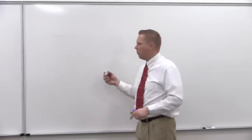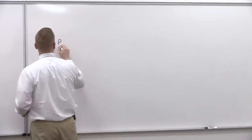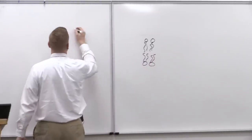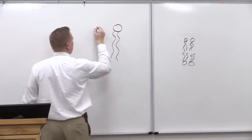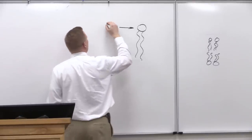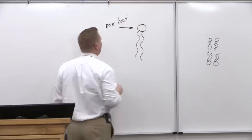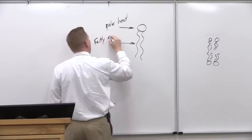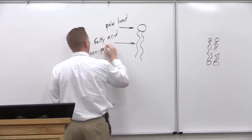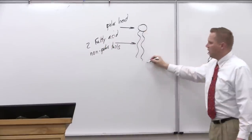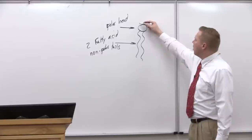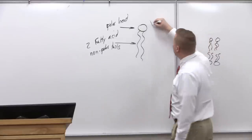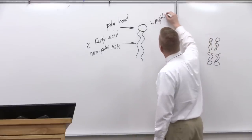The primary component of membranes is phospholipids. A phospholipid is often drawn as a circle representing the polar head group, and then two fatty acid nonpolar tails. This tail region is hydrophobic — it repels water and tries to get away from water. But the head region often has a phosphate on it with a charge, so it is actually very hydrophilic. So you've got this hydrophilic head and hydrophobic tails.